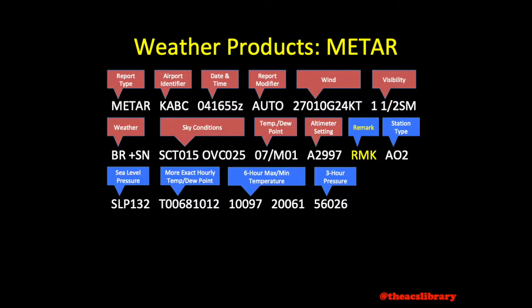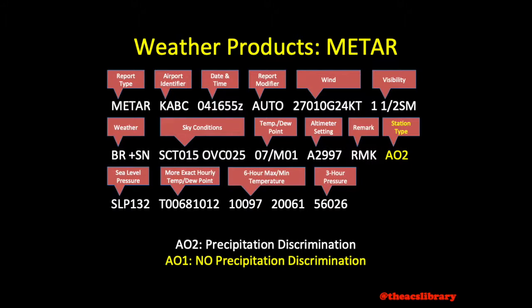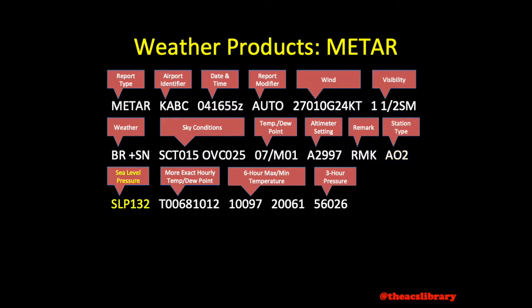Commonly seen remarks include the type of station. AO2 stations have precipitation discrimination capability, as opposed to AO1 which does not. Precipitation at an AO1 station would be reported as unknown precipitation, coded UP. Sea level pressure measured in millibars differs from altimeter setting in that it is the pressure of the atmosphere at sea level directly measured, whereas altimeter setting is defined as the pressure used to adjust the altimeter to indicate the correct altitude. 1,013 millibars or hectopascals equals 29.92 inches of mercury.